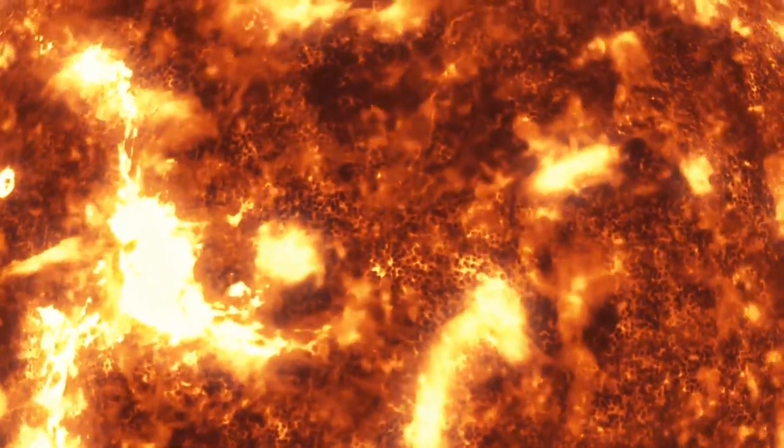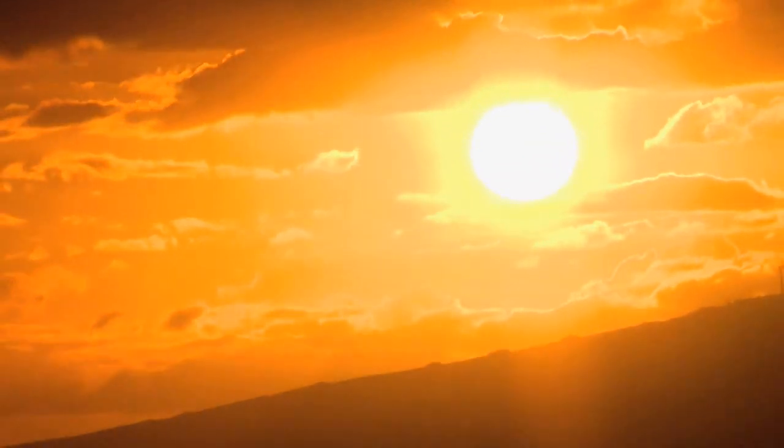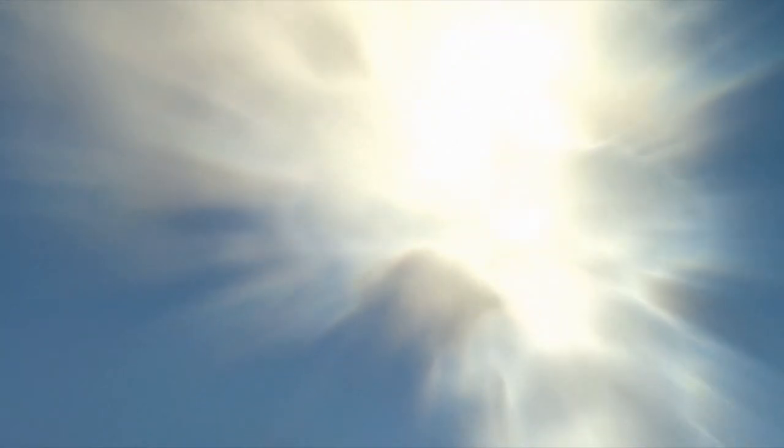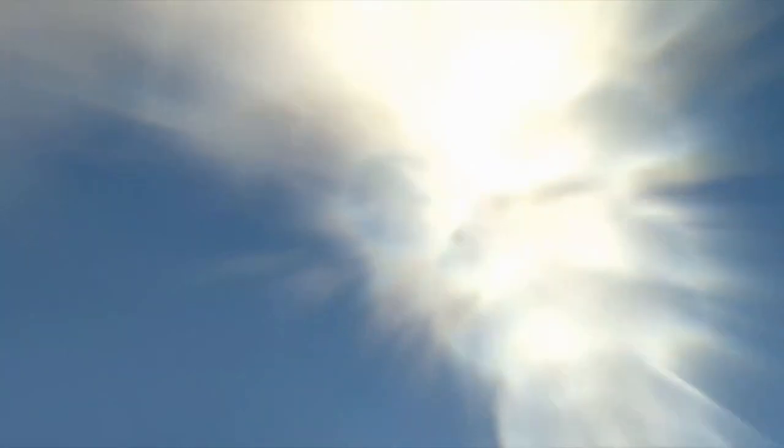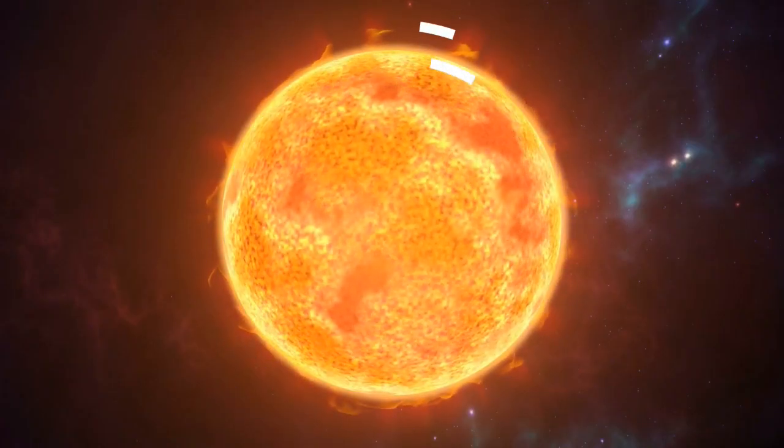But despite these extremely hot temperatures and high energy levels, the sun doesn't actually burn. This is because burning is a chemical reaction that cannot happen without oxygen. But since oxygen's not present, the sun uses a process called nuclear fusion to generate a massive amount of energy it distributes to the planets around it.